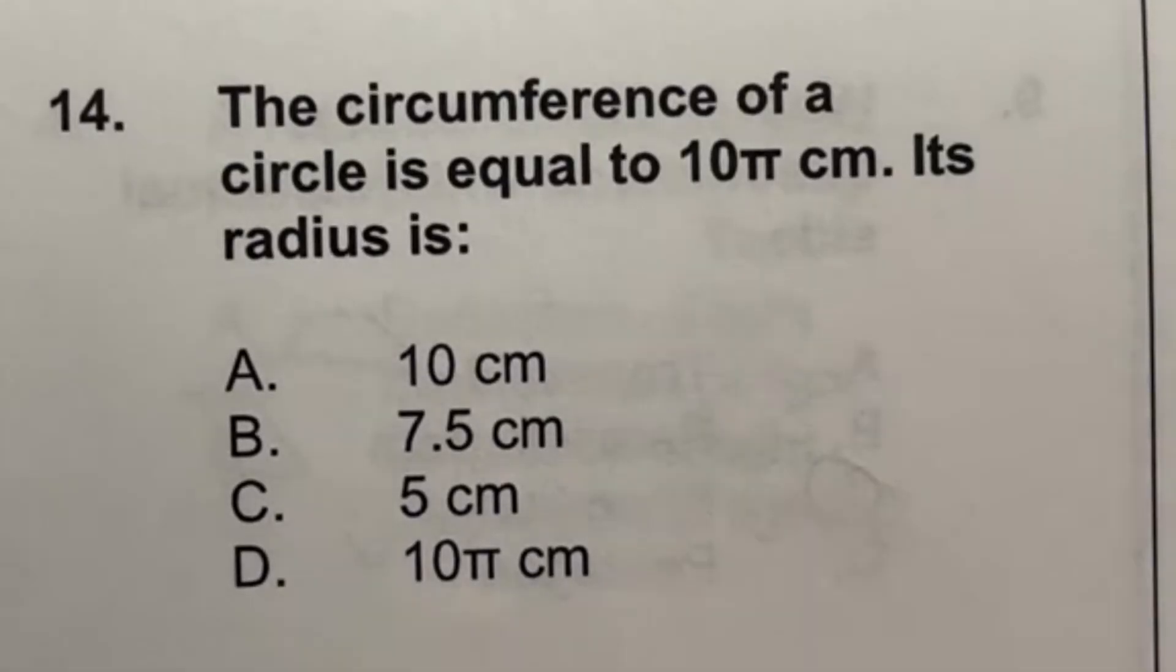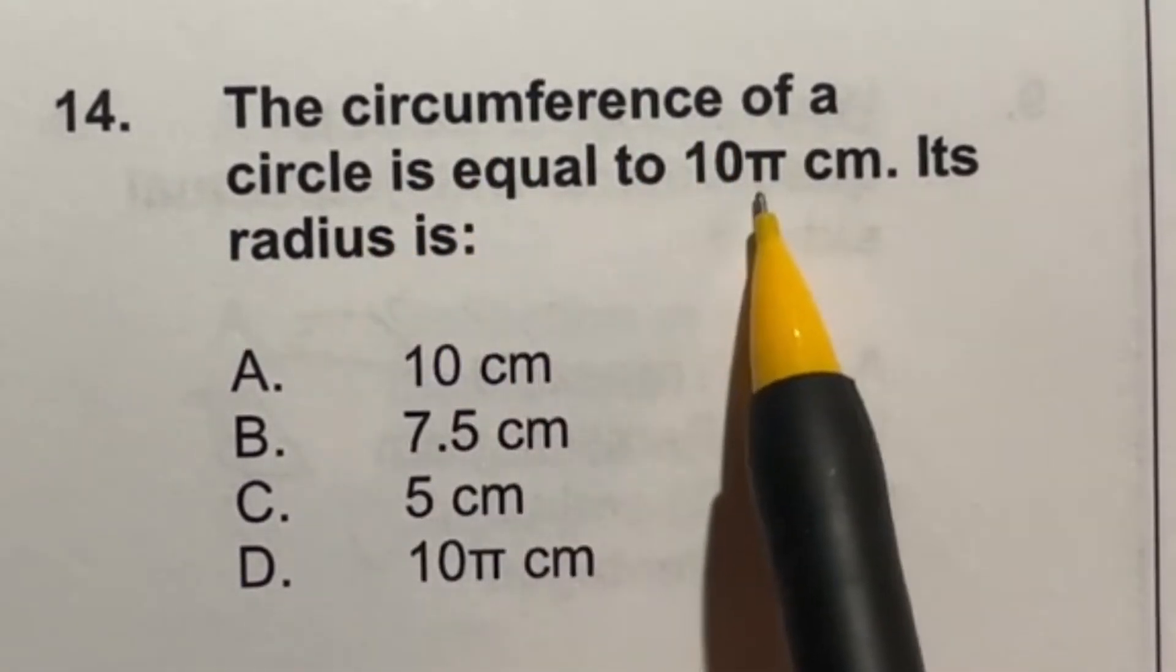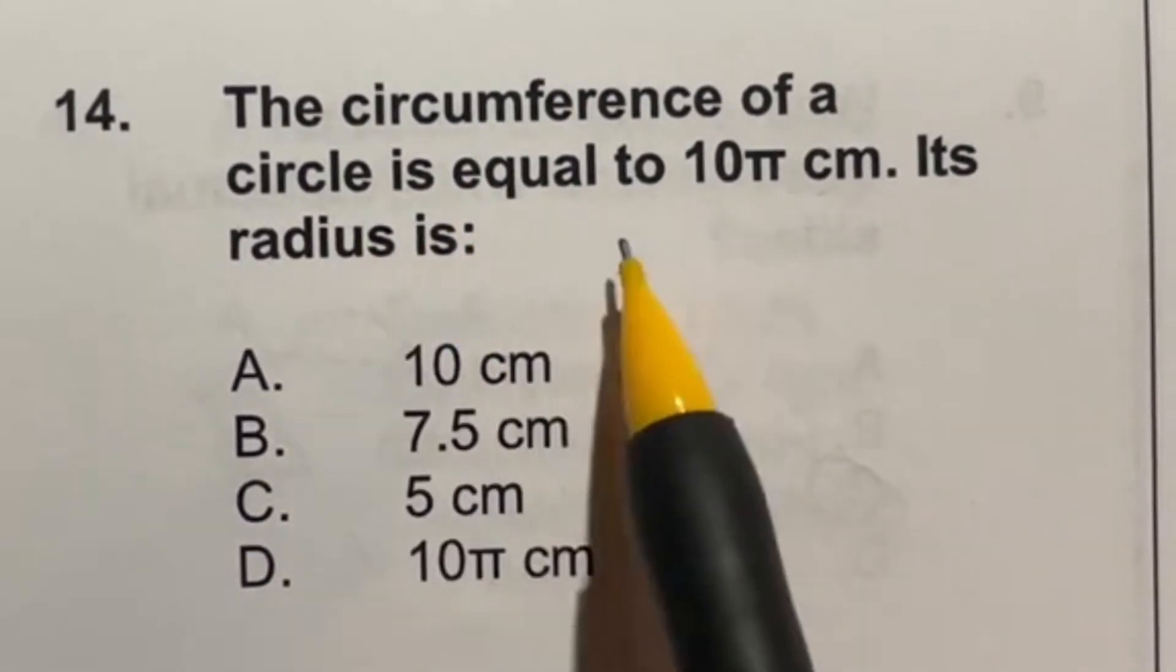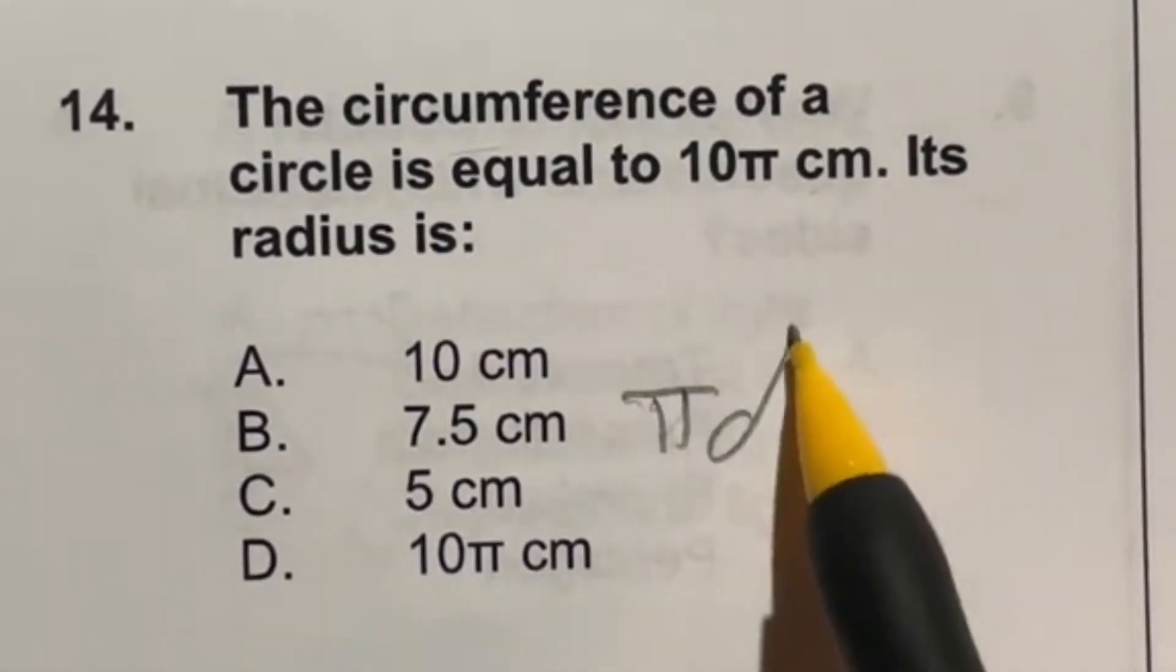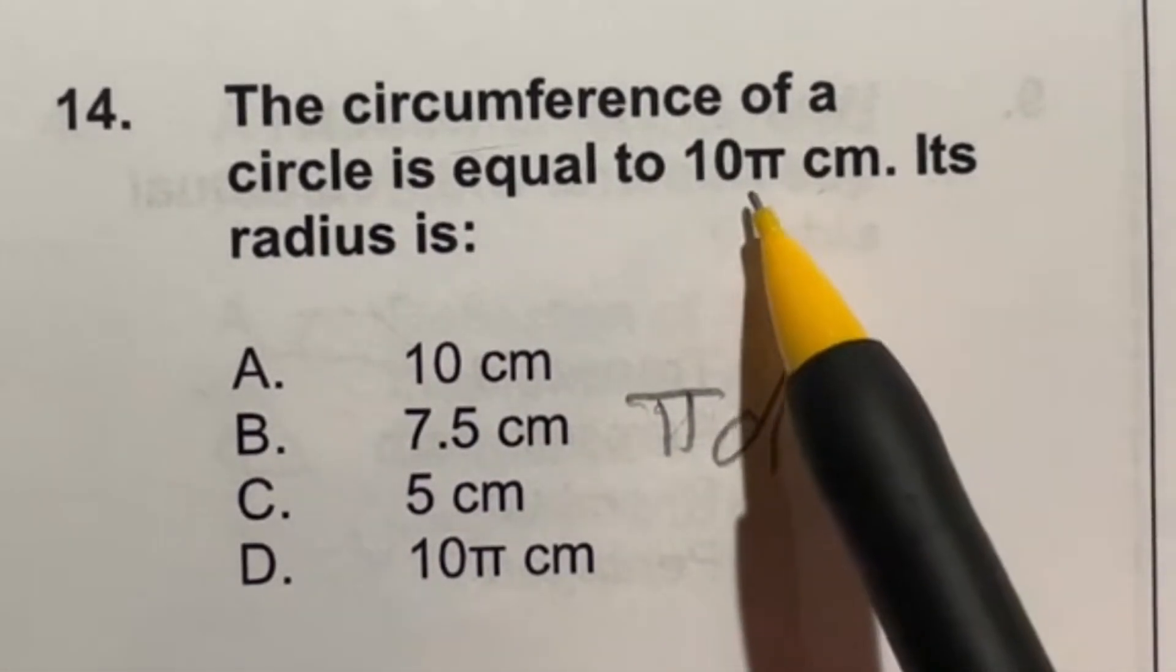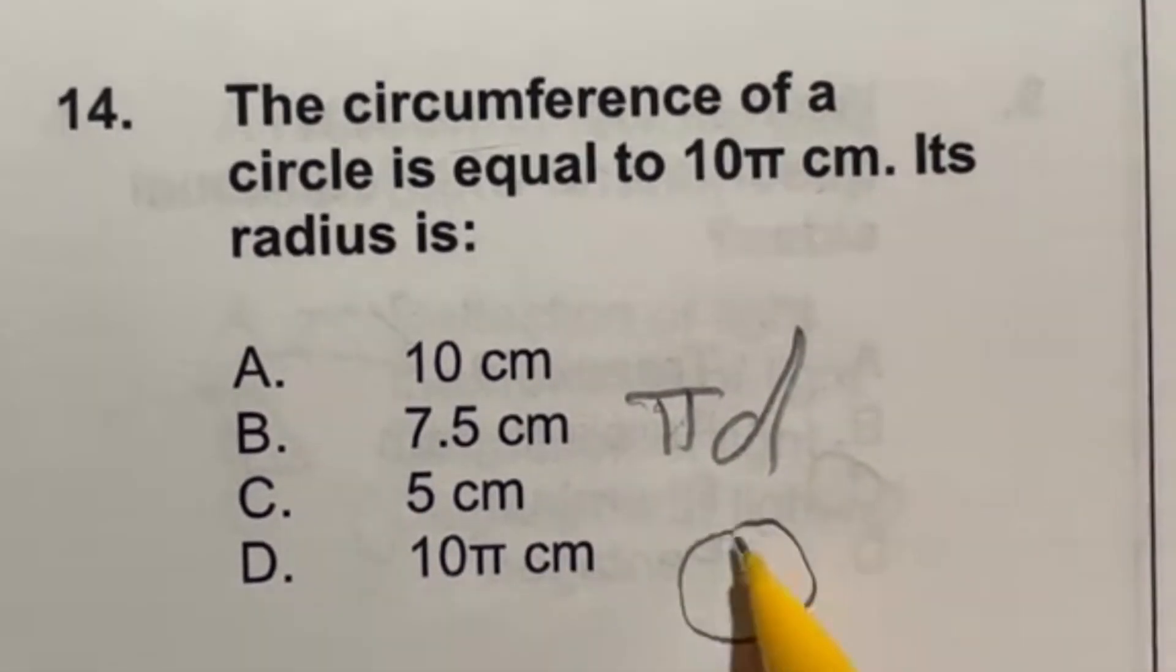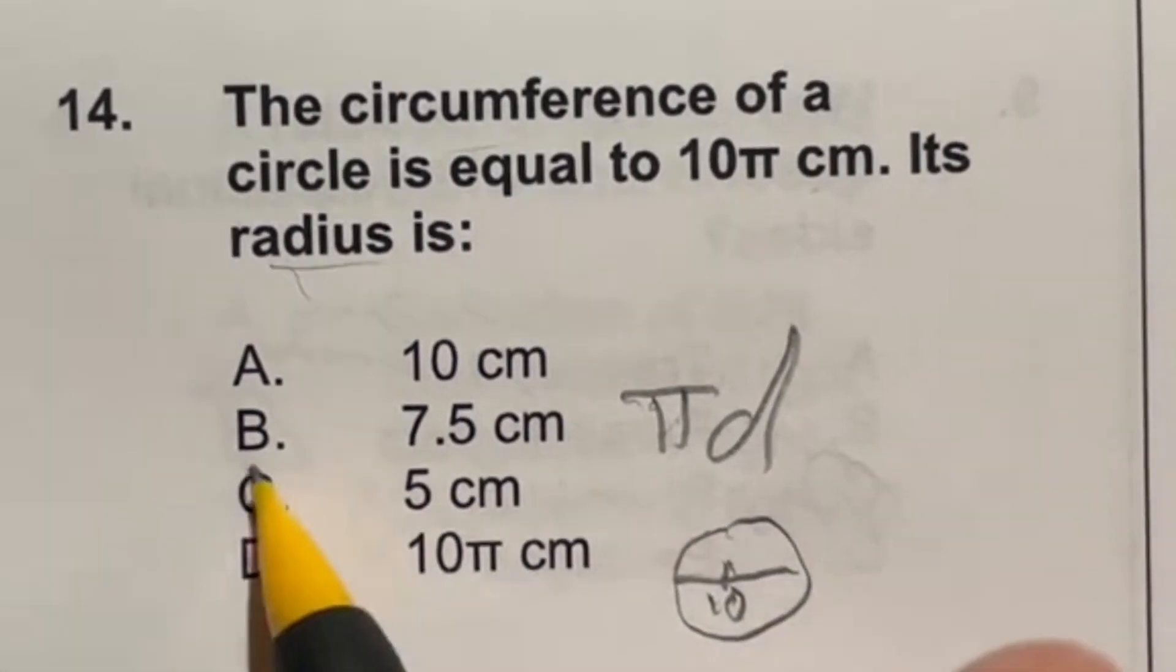Number 14 is all about knowing your formulas. In this case, it says the circumference of a circle is equal to 10 pi centimeters. Its radius is what? Well, the actual equation for circumference is pi times your diameter. So in this case, that means that answer is going to be 10 pi. So that means pi is here, so D must be 10. So diameter is the full length of a circle here through the middle, and the radius, what we're looking for, is just half of that. So what's half of 10? It's going to be 5. So our final answer here is C.